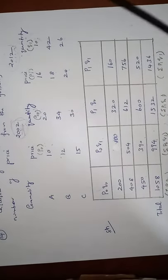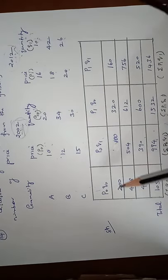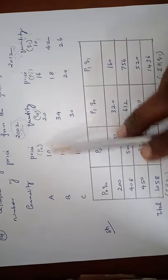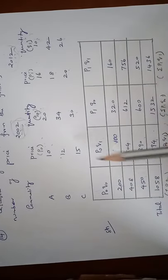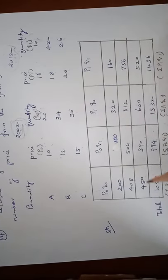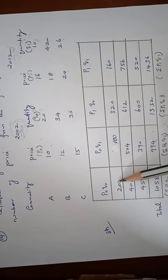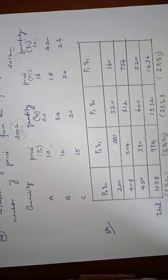So first we have to find out P0Q0. So P0Q0 is multiple P0 and Q0, is 10 into 20 is 200. Second value is 408. Third value is 450. Adding these three values, so sigma P0Q0 is 1058.